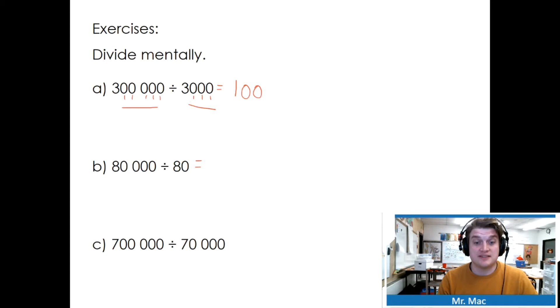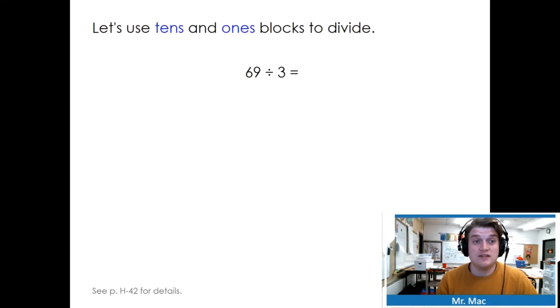Finish up the rest of them. Let's use tens and ones blocks to divide. 69 divided by 3. We need to share these into three equal groups: one group, two group, three group. Let's start with the ones.